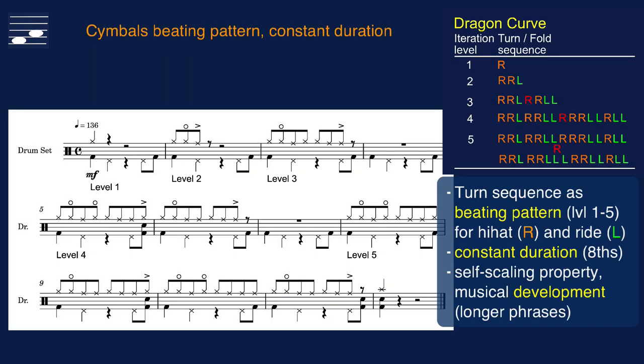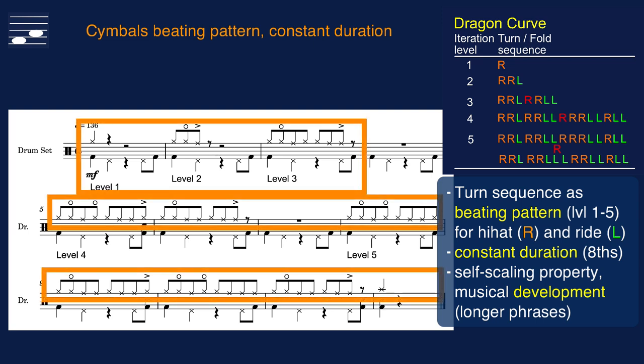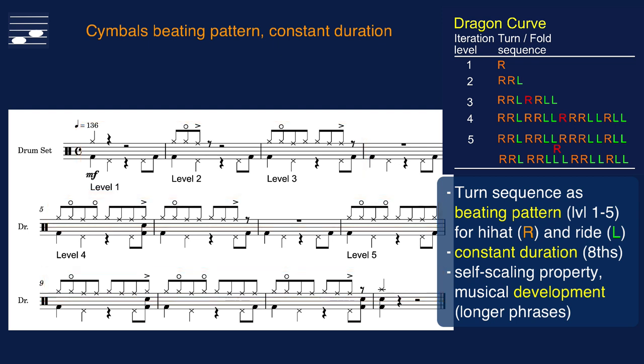Alternatively, we use these constant duration beating patterns for a combination of hi-hat and ride cymbal. We start with level 1 and continue with levels 2 to 5, but you may create your own sequence of iteration levels. The phrases with 1, 3, 7, 15 and 31 attacks once again demonstrate the development character.